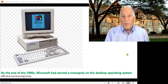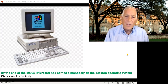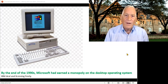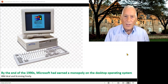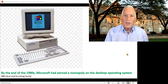In the case of Microsoft, by the end of the 1990s, Microsoft had a monopoly. It really had total dominance, and the court found it had a monopoly on the desktop operating system — basically the Windows operating system — which ran on at least 95% of the personal computers people had.